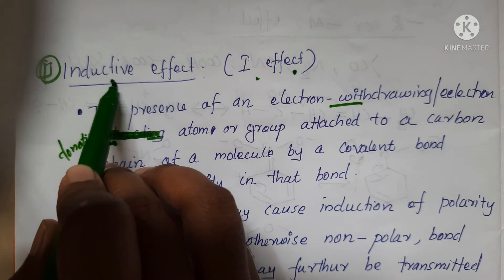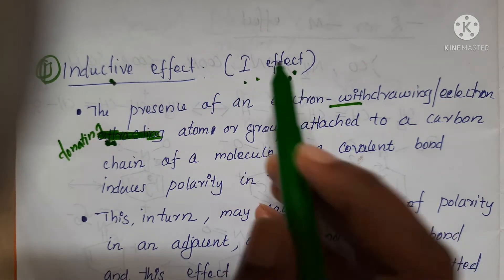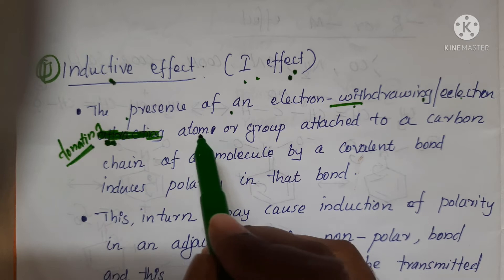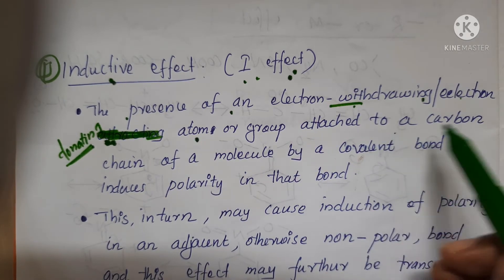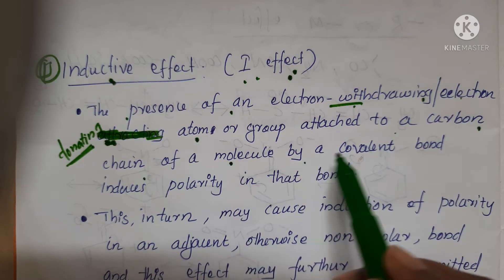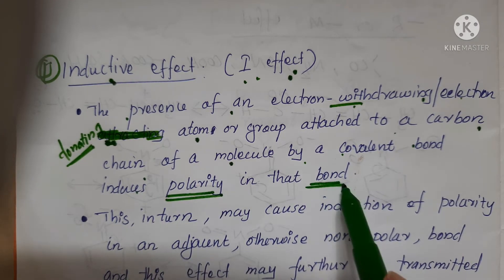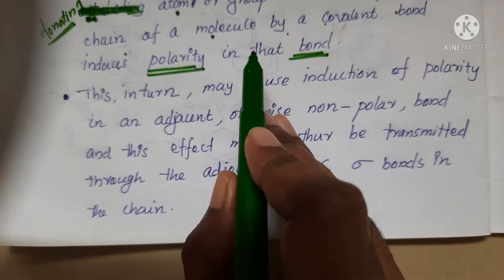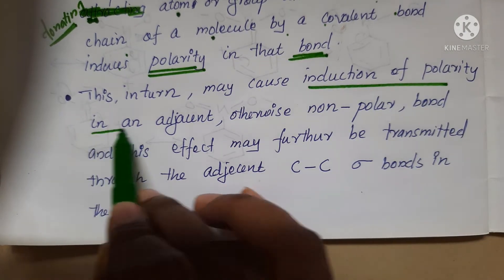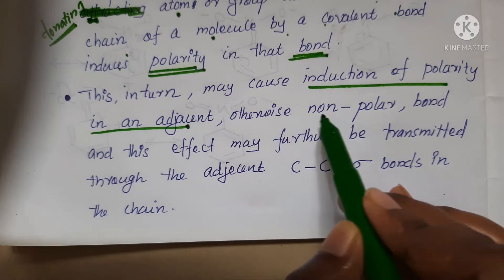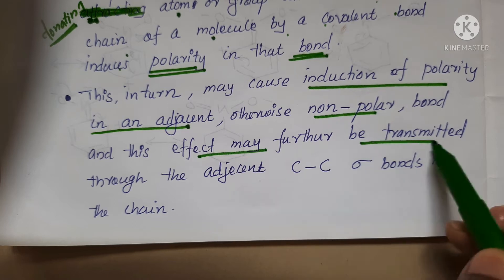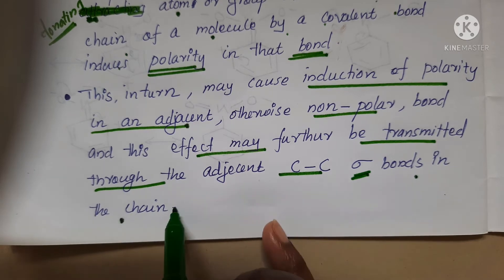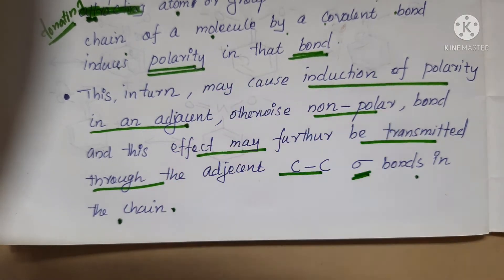Here are our options. First, inductive effect or I-effect. The presence of an electron-withdrawing or electron-donating atom or group attached to a carbon chain of a molecule by a covalent bond induces polarity. This in turn may cause induction of polarity in an adjacent or non-polar bond, and this effect may further be transmitted through adjacent carbon-carbon sigma bonds in the chain. This is the inductive effect.